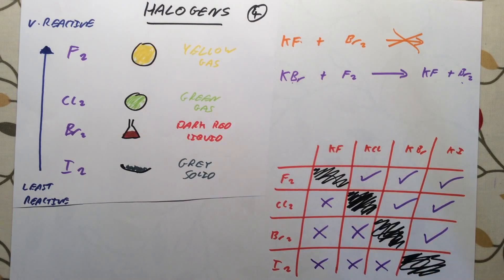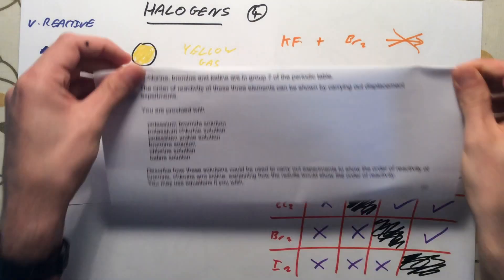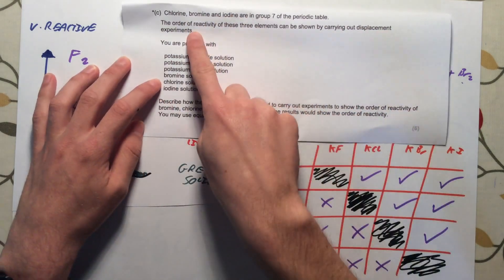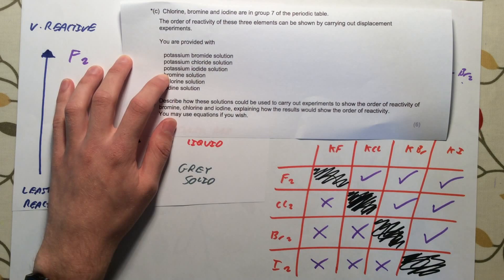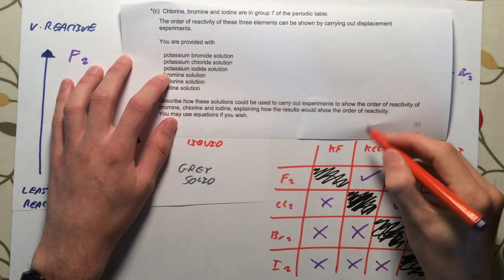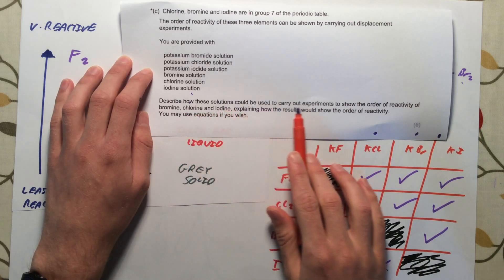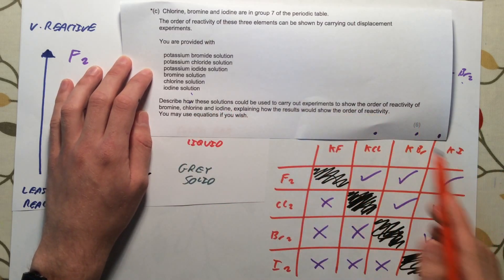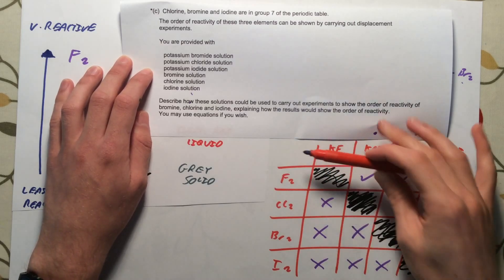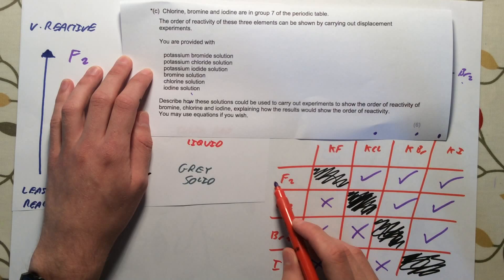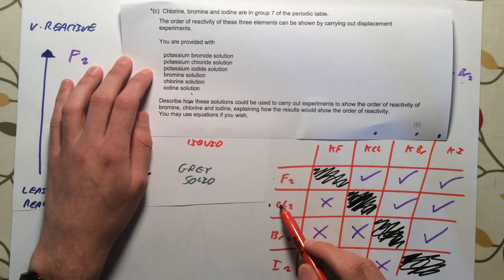In an exam you may be asked to interpret this type of information. A common question gives you chlorine, bromine, and iodine solutions plus potassium bromide, potassium chloride, and potassium iodide solutions, and asks you to describe how to carry out displacement experiments to show the order of reactivity. You would add each halogen solution to each halide salt, observe colour changes, and use the results — with chlorine the most reactive and iodine the least — to establish the order.